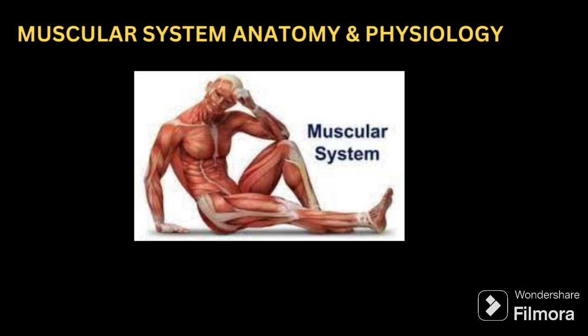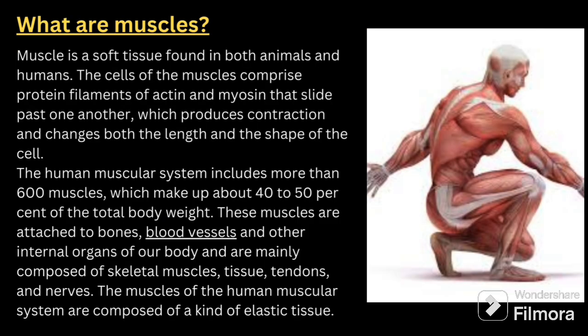So whenever you are talking about the muscular system, you have to start with the functions — not only the muscular system, but about any system. First, we will see what are muscles. Muscles are soft tissue found in both animals and humans. The cells of the muscle comprise protein filaments of actin and myosin that slide past one another, which produces contraction and changes both the length and shape of the cell. The human muscular system includes more than 600 muscles, which make up 40 to 50 percent of the total body weight. The muscles are attached to the bones, blood vessels, and other internal organs, and are mainly composed of skeletal muscle tissue, tendons and nerves. The muscles of the human body are composed of a kind of elastic tissue.